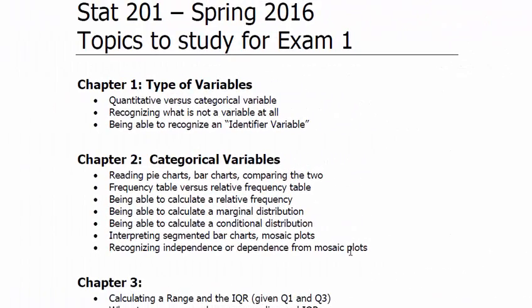Our next objective is to calculate relative frequencies, marginal distributions, and conditional distributions. To do this we need to look at either a frequency table or a contingency table. Let's look at a contingency table since it's a bit more complex.